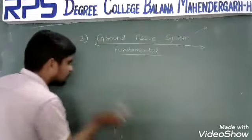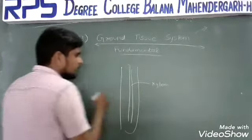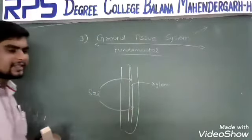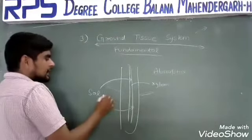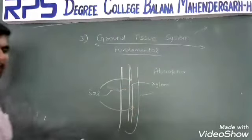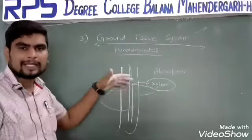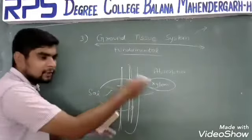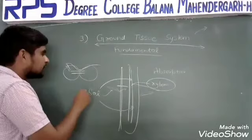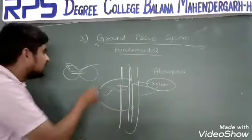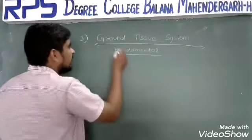For example, in the root, when water is absorbed from the soil, it travels through root hairs, then epidermis, then cortex, then endodermis, then pericycle, and finally reaches the xylem. So before reaching the xylem, water has to travel through all these ground tissues — whether through cell wall to cell wall or from cell to cell. The cortex, pericycle, and endodermis all help in water conduction.